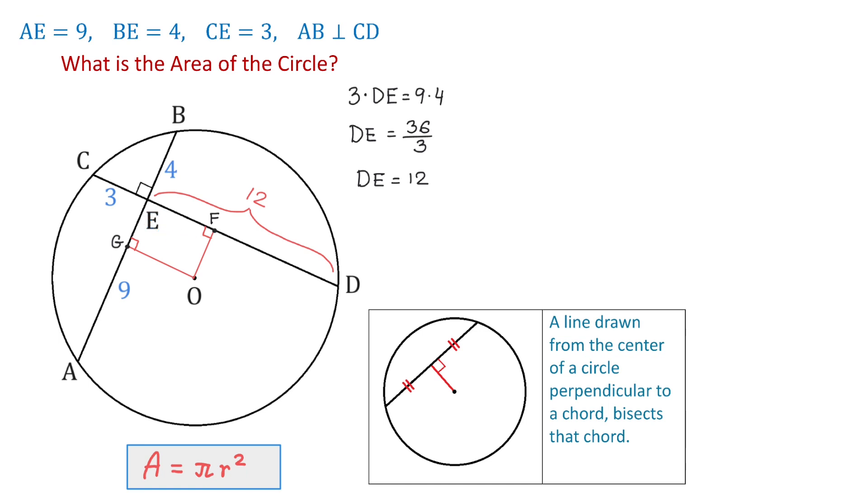Now, we will also connect O and D. As you see, OD is the radius of this circle. Also, here we have a right triangle, and if in this right triangle we could find DF and OF, then we could use the Pythagorean theorem to find OD.